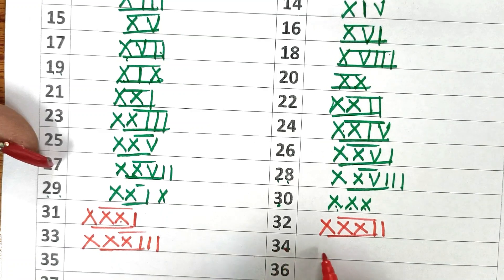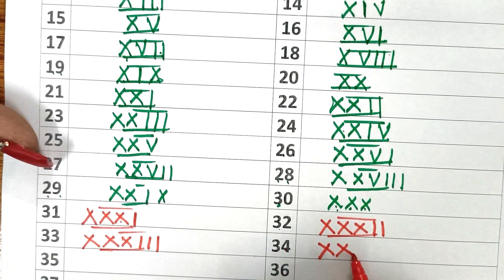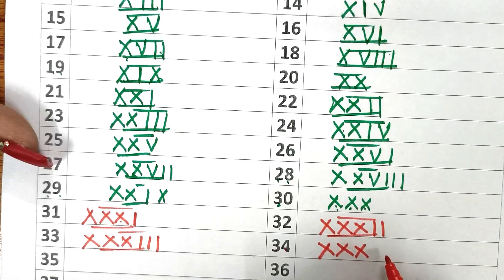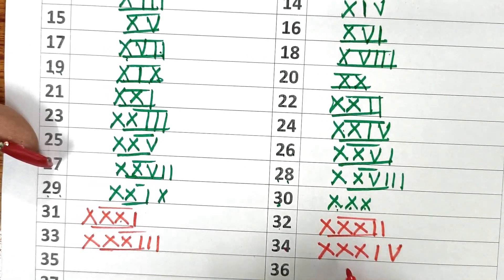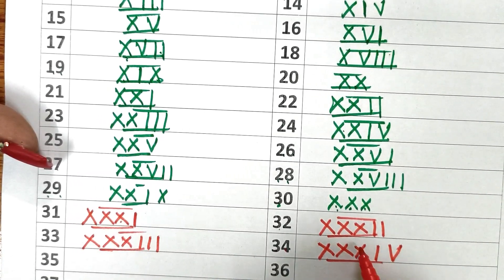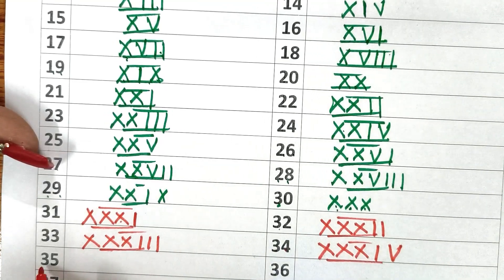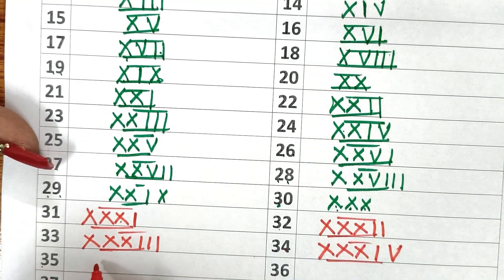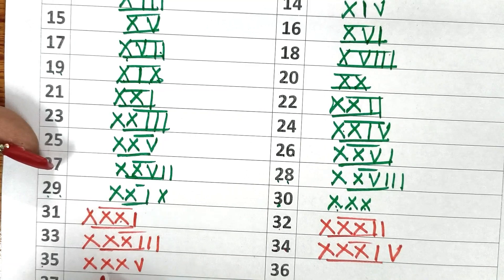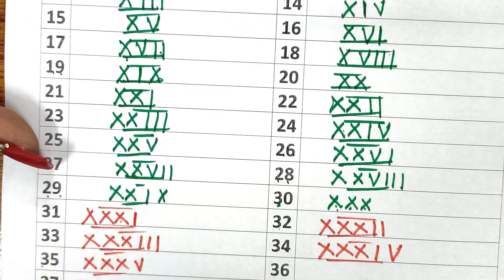Now 34: first write 30 and then 4. How do you write 4? First write 5 and then subtract 1 from it, you will get 4 — XXXIV. Now 35: 30 and then 5 — XXXV.